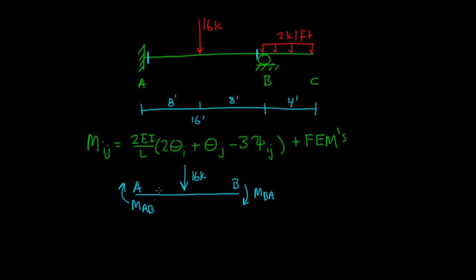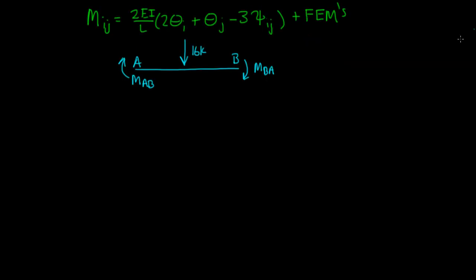Remember each member has two equations, one for the left side of the member, one for the right side. If I write an equation for the left side, member AB, that equals 2EI over L - and our length for AB is 16 feet - times (2θ_A plus θ_B minus 3ψ_AB) plus the fixed end moment for AB.